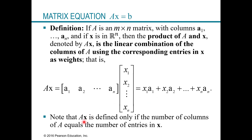Note that AX is defined only if the number of columns of A equals the number of entries of X. Think about it: if there are three columns in A but only two entries in X, we couldn't do this because we'd have column 1 times X1, column 2 times X2, and nothing to multiply column 3 by. So you can only multiply A times X if the number of columns of A equals the number of rows of X.